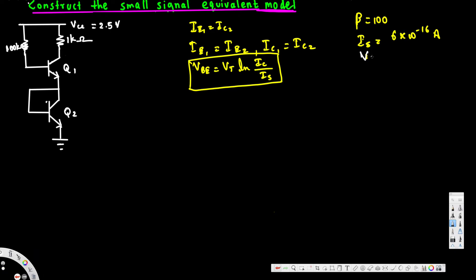Va is equal to infinity. Now let's calculate the ic current. The formula is: Vcc minus ib1 times Rb equals 2·vbe1, where Rb is 100 kilohms (100 times 10 to the power of 3) and Vcc equals 2.5 V.